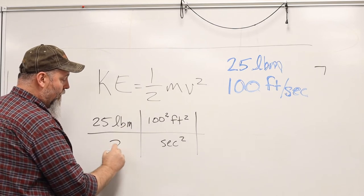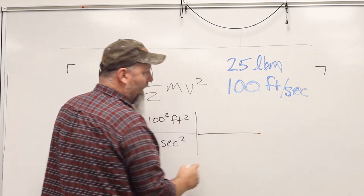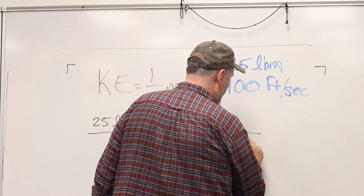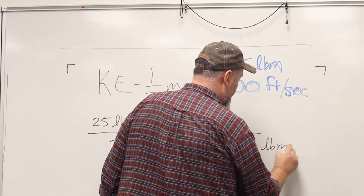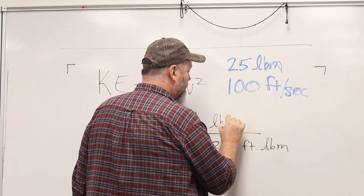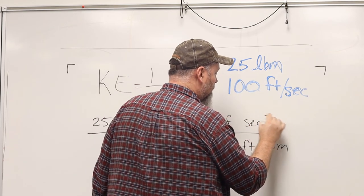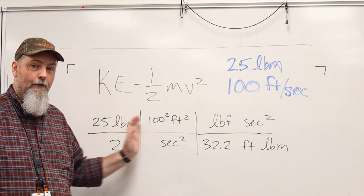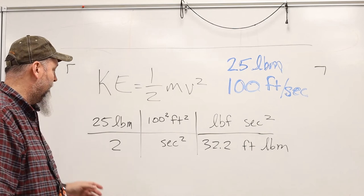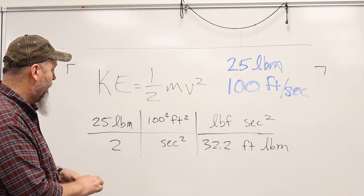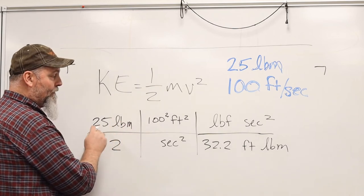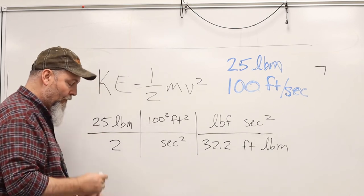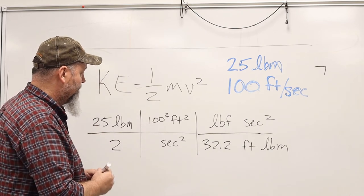Now we'll do the 2. And then we're going to add the conversion factor. This is how you should be doing all your problems. Nice and clean. So on the top, I know I have 25 times 10,000. And on the bottom, I know I have 2 times 32.2. Okay?